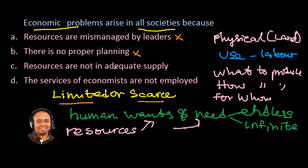Option C: Resources are not in adequate supply. That is exactly what we're talking about — it is limited or scarce. So option C appears to be the right answer. Let us check option D before we conclude: The services of economics are not employed. This is incorrect. So option C is the right answer. Thank you for watching, see you in the next video. Bye-bye.